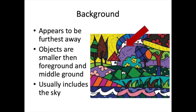The background is the area that appears to be the furthest away. It is closer to the top of your paper and objects in this area are small — they're teeny tiny because they are supposed to be far, far away. Anything that's far away from us looks smaller, so when you're putting things in your background, you have to make them smaller than things in your middle ground and foreground.